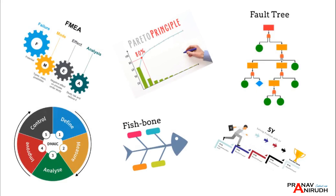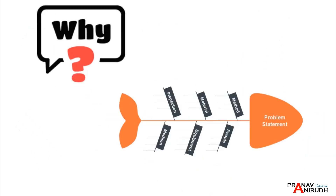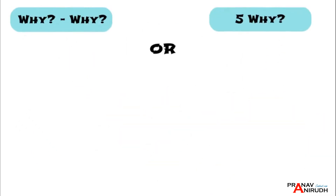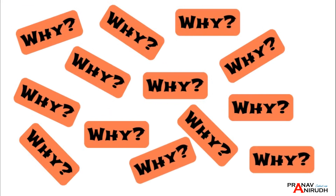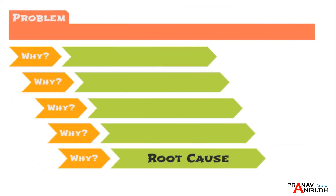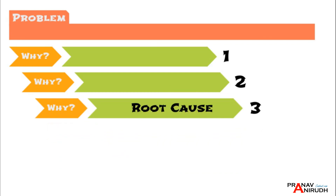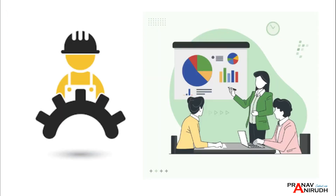There are several methods and approaches used in root cause analysis. In this video, we'll discuss the most commonly used problem-solving methods, which are Why-Why and Fishbone. The Why-Why, or 5-Why, is a problem-solving technique used to uncover the root cause of an issue by repeatedly asking the question 'why.' The process typically involves asking 'why' five times, although the exact number can vary depending on the situation. The 5-Why can be used in a variety of situations, from troubleshooting technical issues to solving business problems.